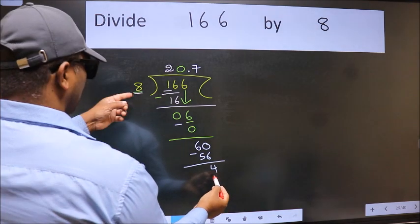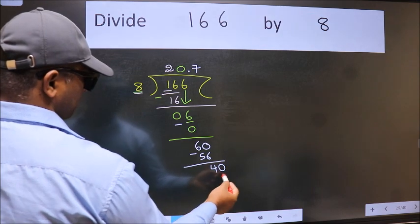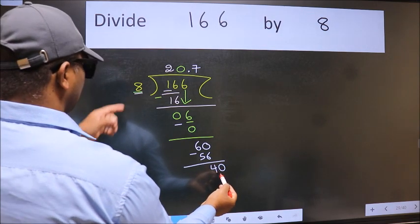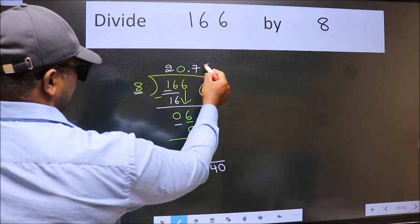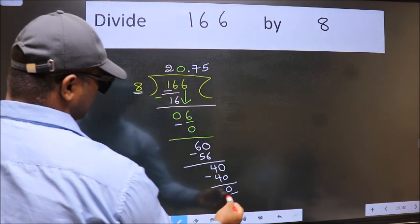4 is smaller than 8, and we already have the decimal. So directly take 0. So, 40. When do we get 40 in 8 table? 8 fives, 40. Now we subtract. We get 0.